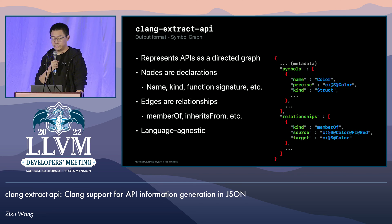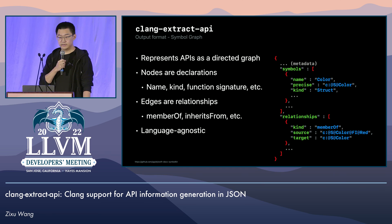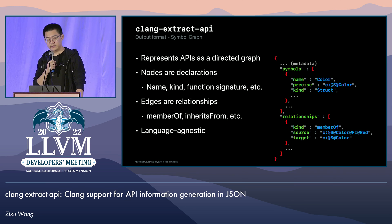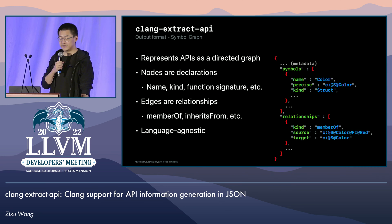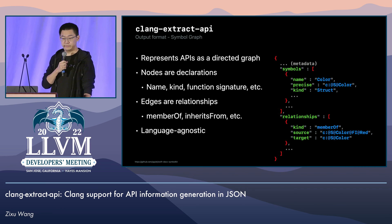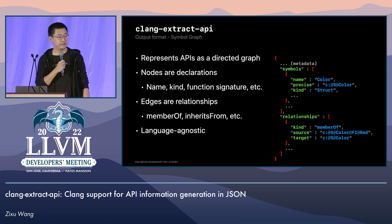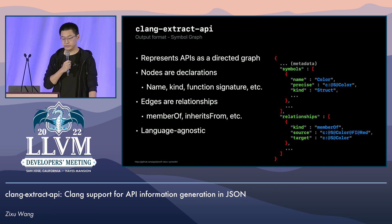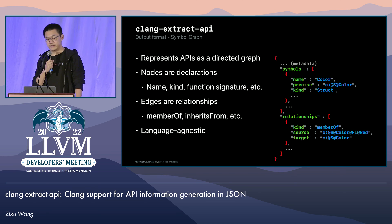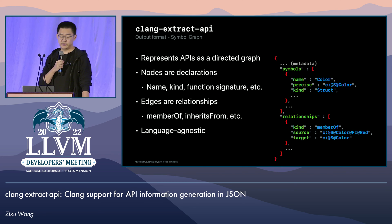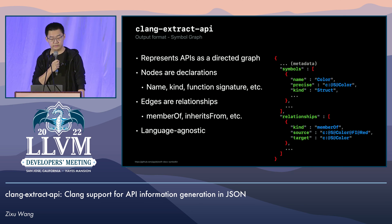Another nice feature about the symbol graph format is that it is designed to be general and language agnostic. That means it is easy to extend the format for more and future languages, with additional and optional fields added in the format to represent the unique language features of each language. And also, this way it doesn't require downstream tools to have a deep understanding about the languages themselves.